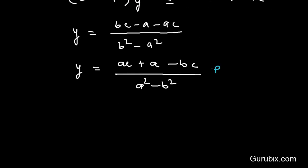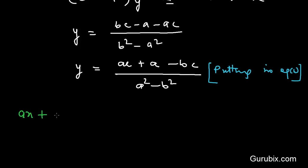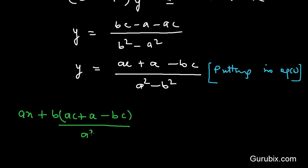Now we shall substitute this value of y into equation number 1 to get the value of x. Equation number 1 is ax plus by, where y equals (ac plus a minus bc) over (a-squared minus b-squared).